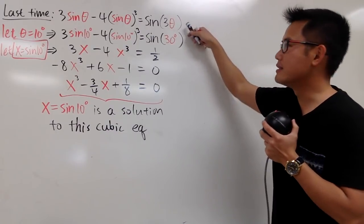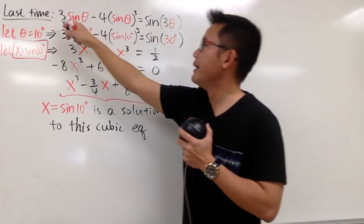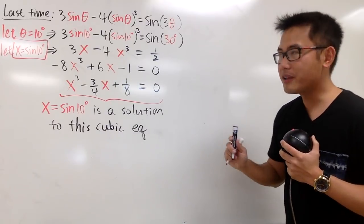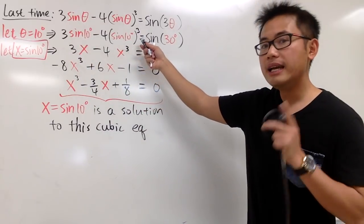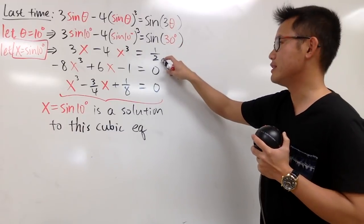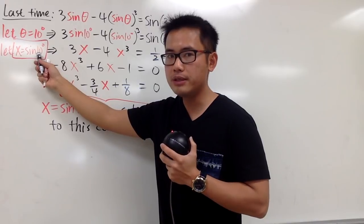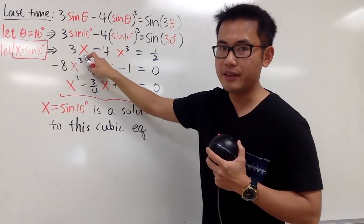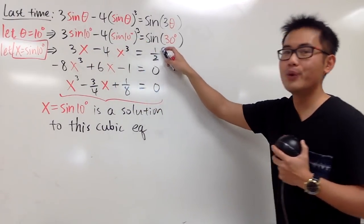We saw this last time — this is the triple-angle identity for sine. In other words, sine of 3θ is equal to 3 sin θ minus 4 times sin³θ. From here, we plugged in 10 degrees into theta, and we got sine of 30 degrees on the left, which equals 1/2. We let x equal to sine of 10 degrees, and then we came up with this equation: 3x minus 4x³ equals 1/2.